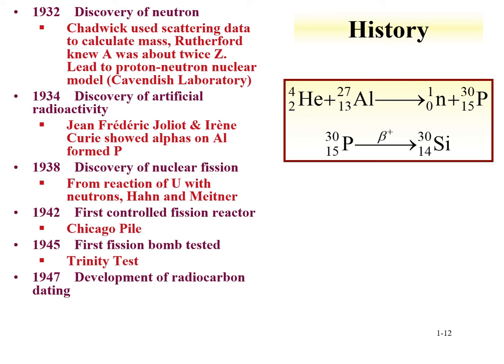In 1934, the discovery of artificial radioactivity was made by the Joliot-Curies — the child of Pierre and Marie Curie getting involved in the same sort of research. In 1938, nuclear fission was discovered by Lisa Meitner, Otto Hahn, and Fritz Strassmann in Germany. This was actually a very important consideration — that the Germans had this understanding of fission and were technically advanced in this area prior to the Second World War.